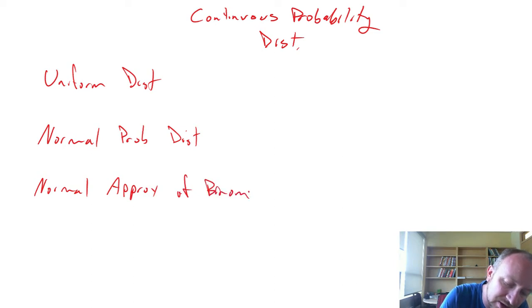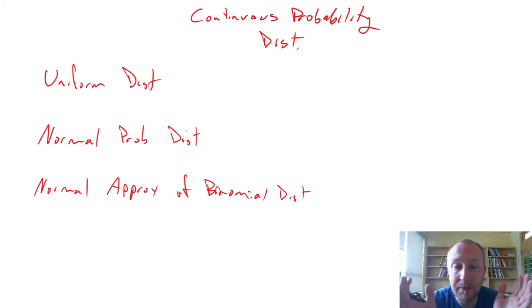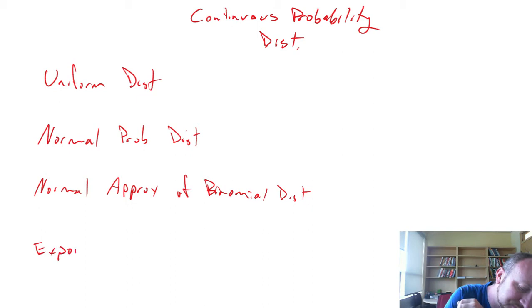Remember we talked about binomial distributions in chapter five. Here we'll see how we can approximate binomial distributions or binomial probabilities using the normal distribution. And we'll also look at exponential probability distributions.